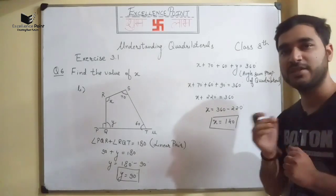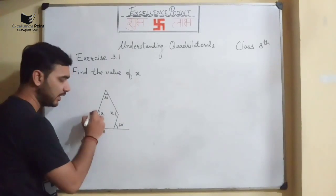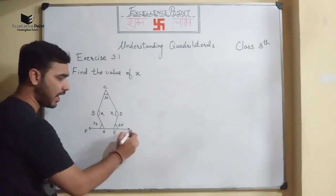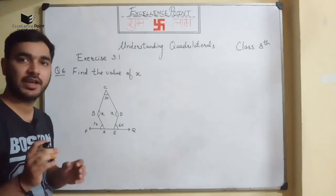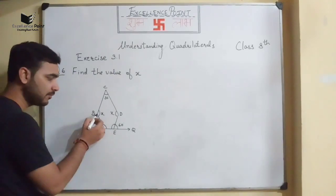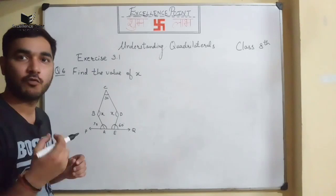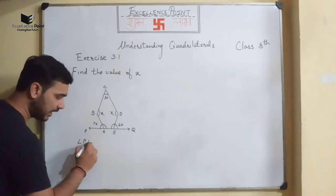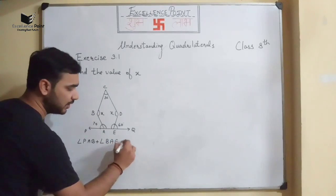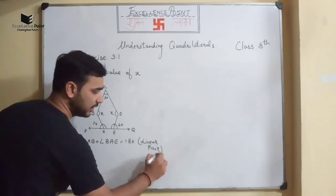In question C, we have a pentagon. We name the vertices A, B, C, D, E and the outer ends P and Q. We can only find x when we have the interior angles. We need angles BAE and DEA. Using linear pair: angle PAB + angle BAE = 180°.